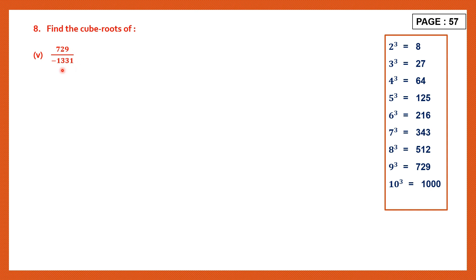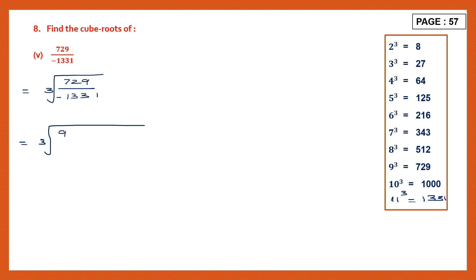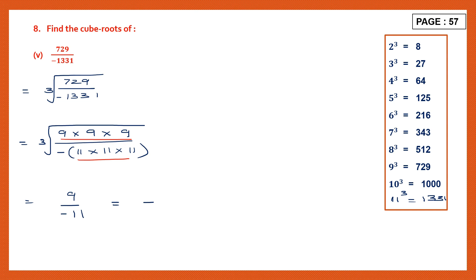Next one: 729 by minus 1331. We have to find the cube root of this. So we have 729 by minus 1331, the cube root of this. Now looking at the table, 729 the cube root is 9. Now 1331 — that is the number after 10, so 11 cubed is 1331. So let's write this as 729 is 9 cubed: 9 into 9 into 9. In the denominator we have minus of 11 into 11 into 11. Now get your triplet — you have a triplet there and a triplet here. So we have 9 by minus 11, or this can also be written as minus 9 by 11. Both are correct. So here this is how we normally write.